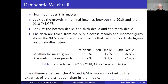Data was taken from the public access records, where very high income figures are top-coded, so the top decile figures are purely illustrative. The arithmetic mean shows faster growth than the geometric mean in the first decile, and less negative growth in the tenth decile. In the sixth decile there's very little difference. So the distinction between arithmetic means and geometric means matters particularly if you're interested in what's happening at different points in the income distribution.